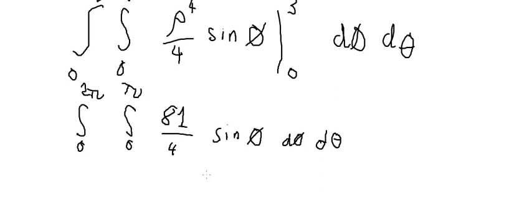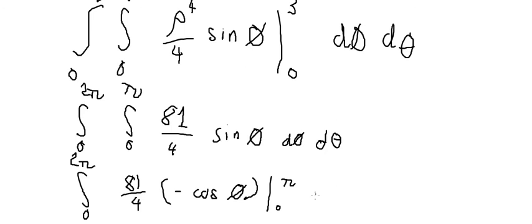Next, this one we got negative cosine phi, and we have the boundary from 0 to pi. This one we got about number 2, and you got 81 over 2.